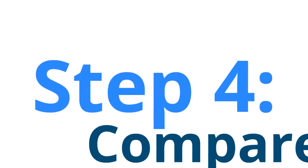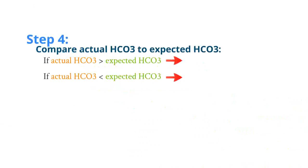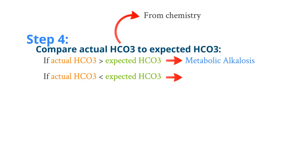In step 4, we will compare the actual bicarbonate to expected bicarbonate levels. If your actual bicarbonate — that is the bicarbonate from the chemistry — is greater than the expected bicarbonate, then you have a metabolic alkalosis. If the actual bicarbonate is less than the expected bicarbonate, then you have a non-anion gap metabolic acidosis.